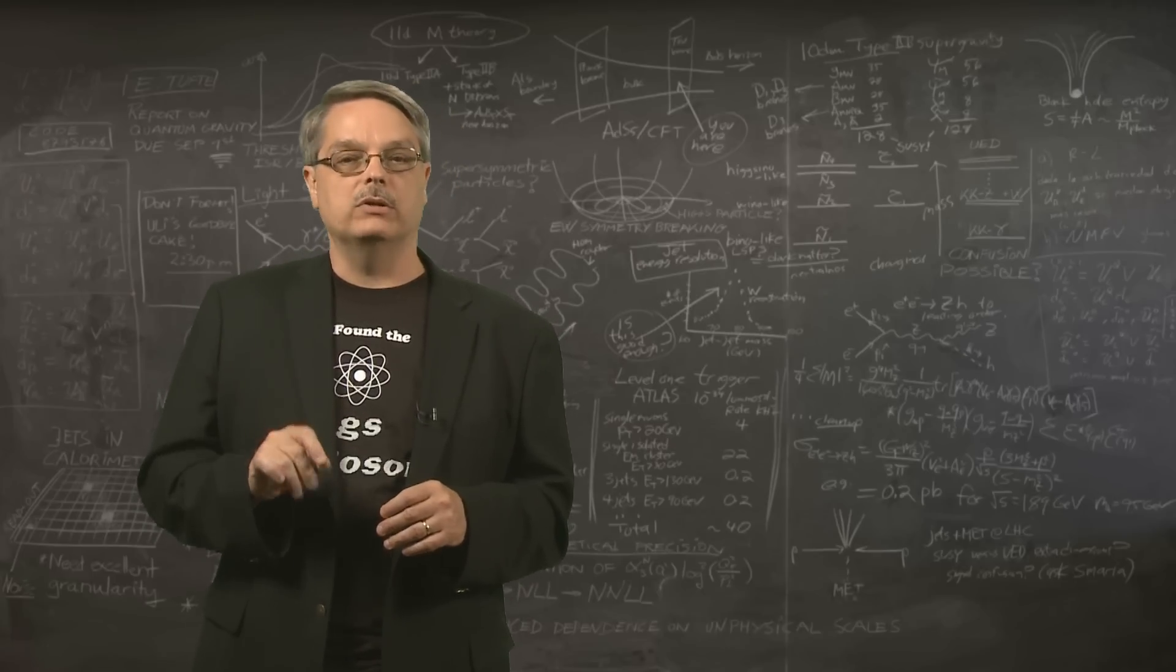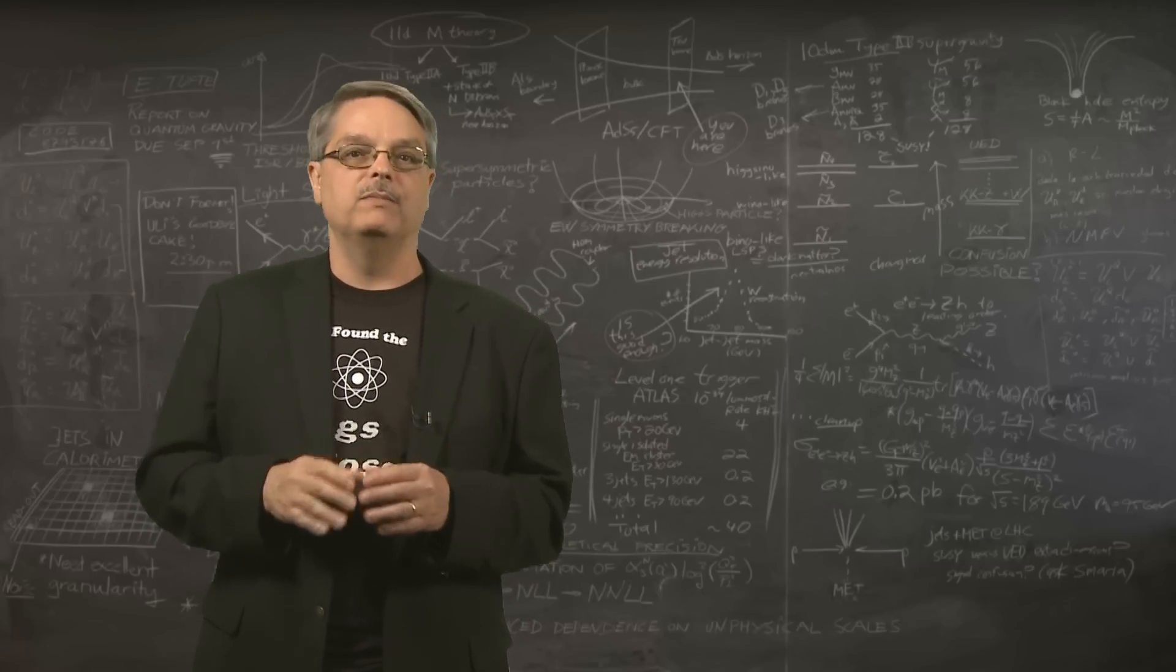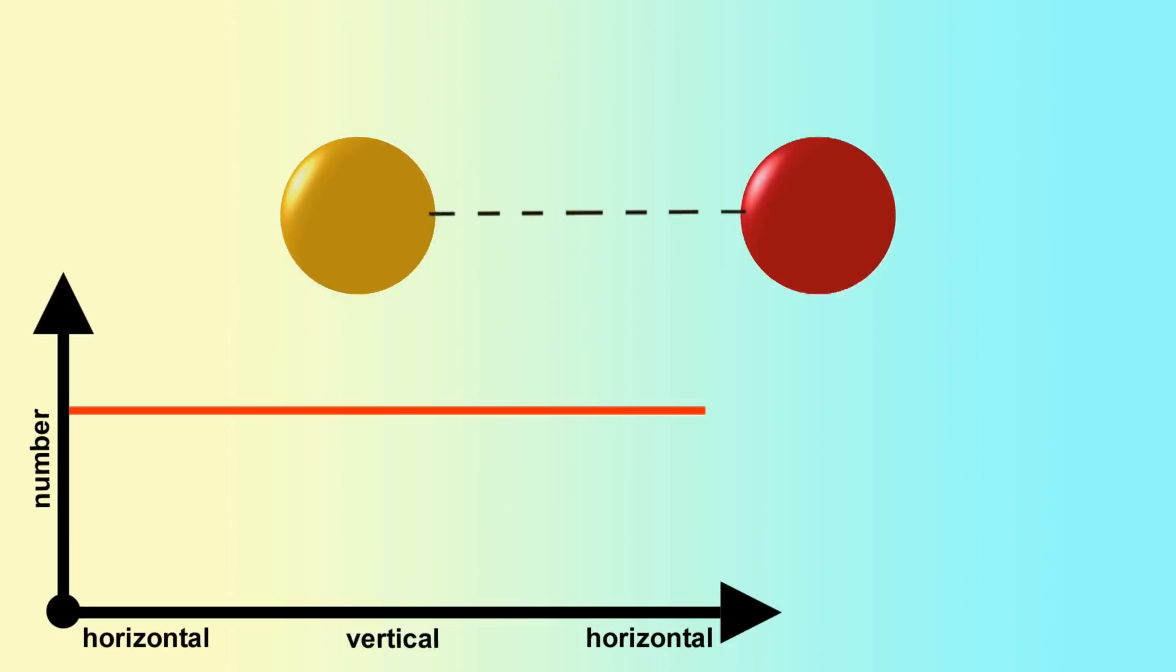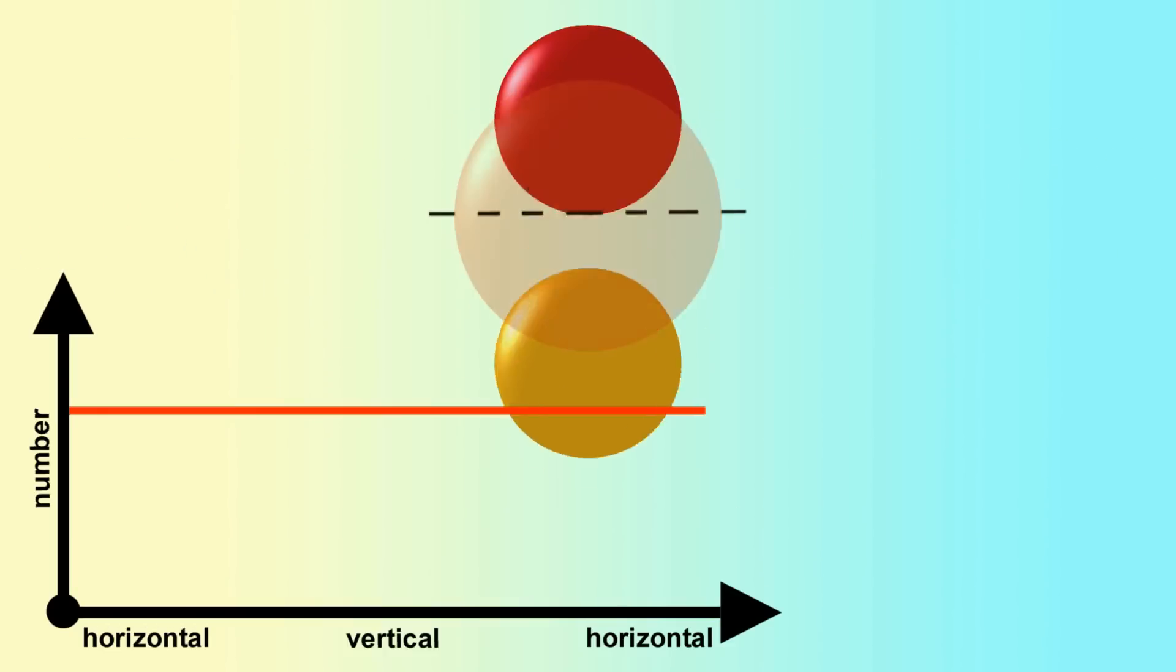If you think of an isolated particle in empty space just sitting there, there is nothing that makes one direction different from any other direction. Left is the same as up is the same as the direction pointing at CERN. If there is nothing to pick a particular direction, then there is nothing to tell the decay products where to go. Thus they will decay with equal probability in all directions, sometimes this way and sometimes that.